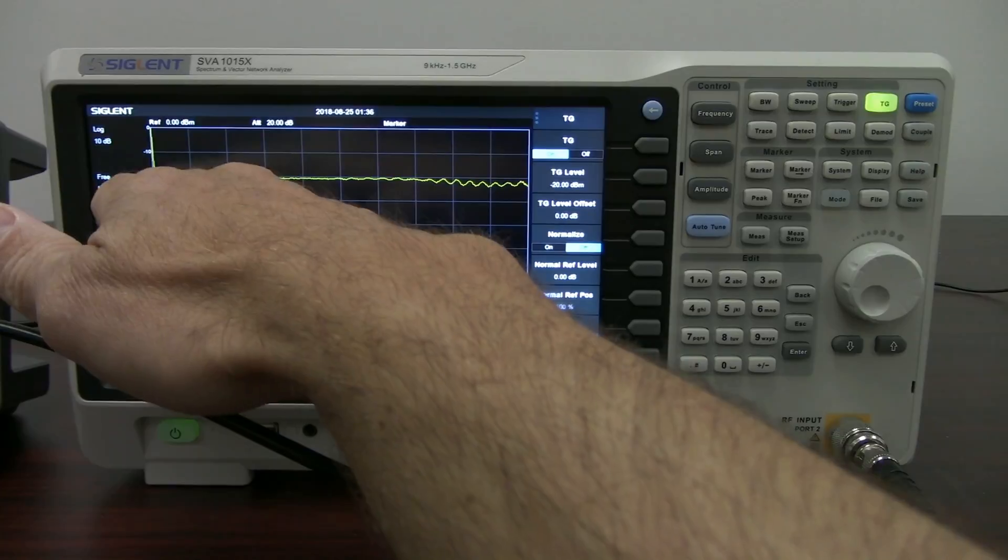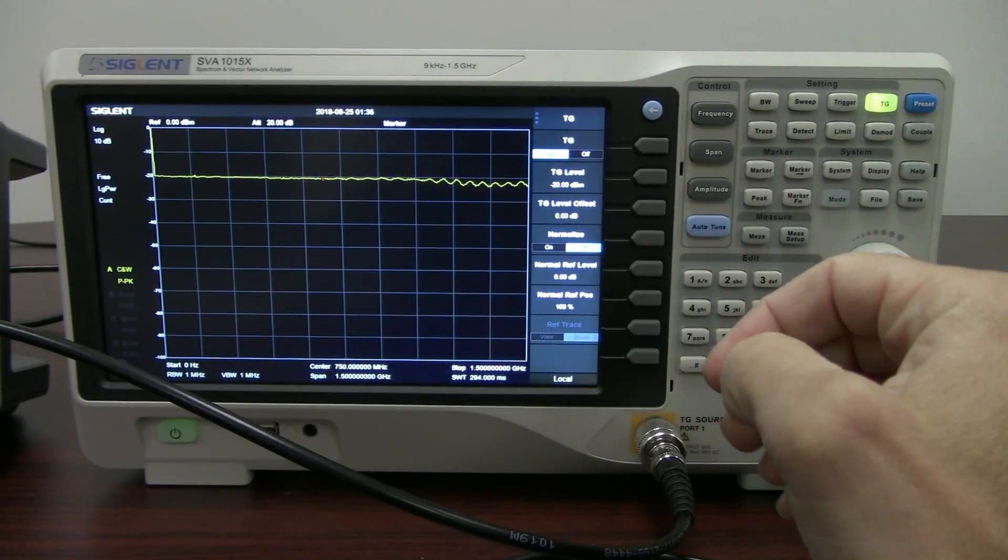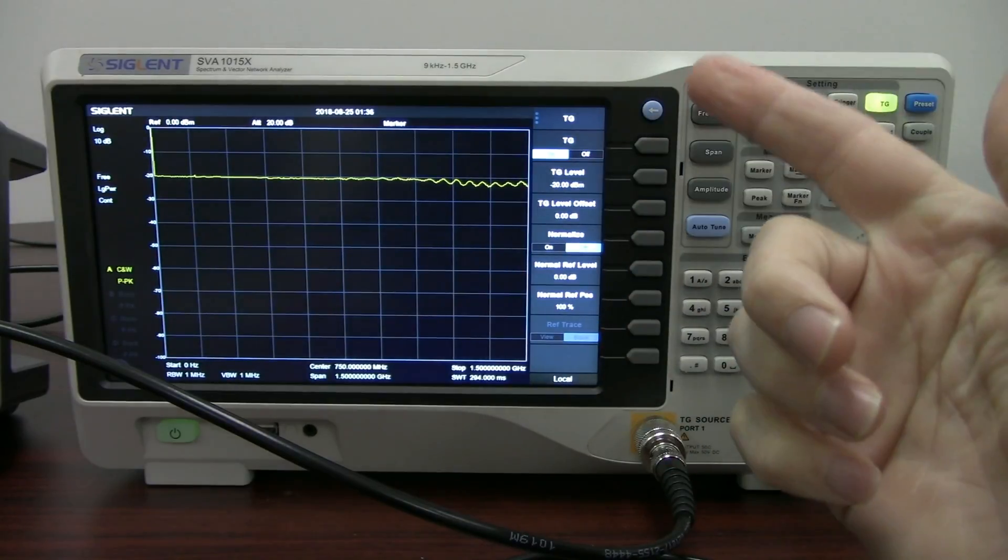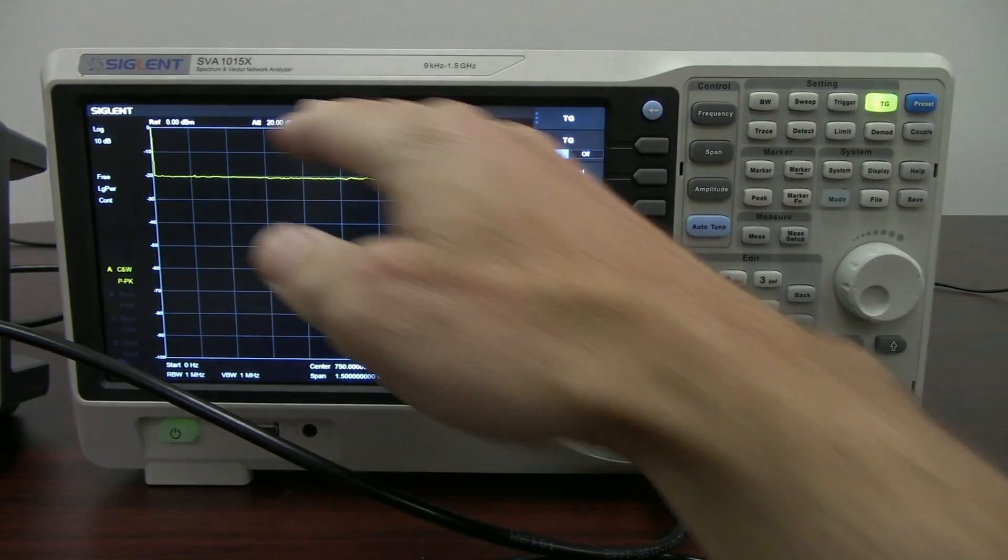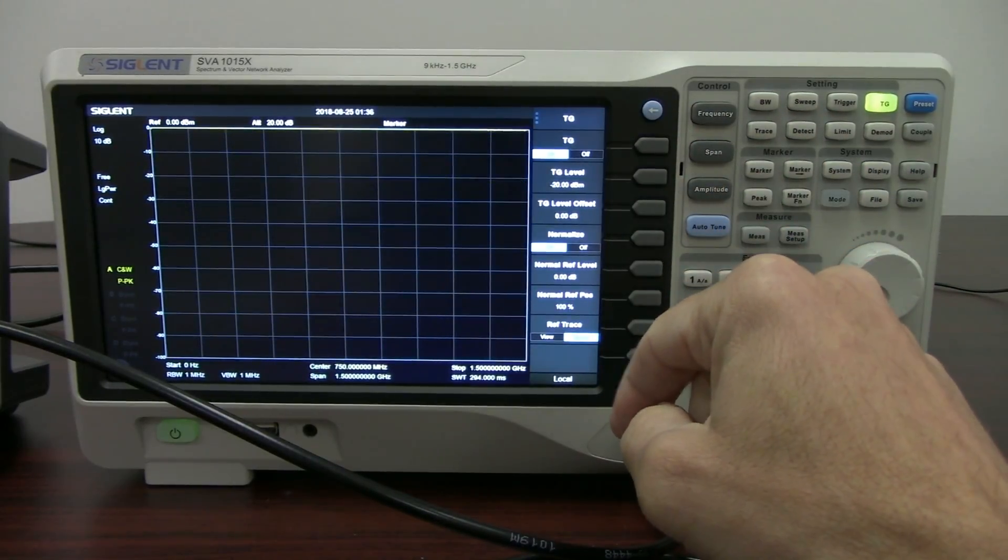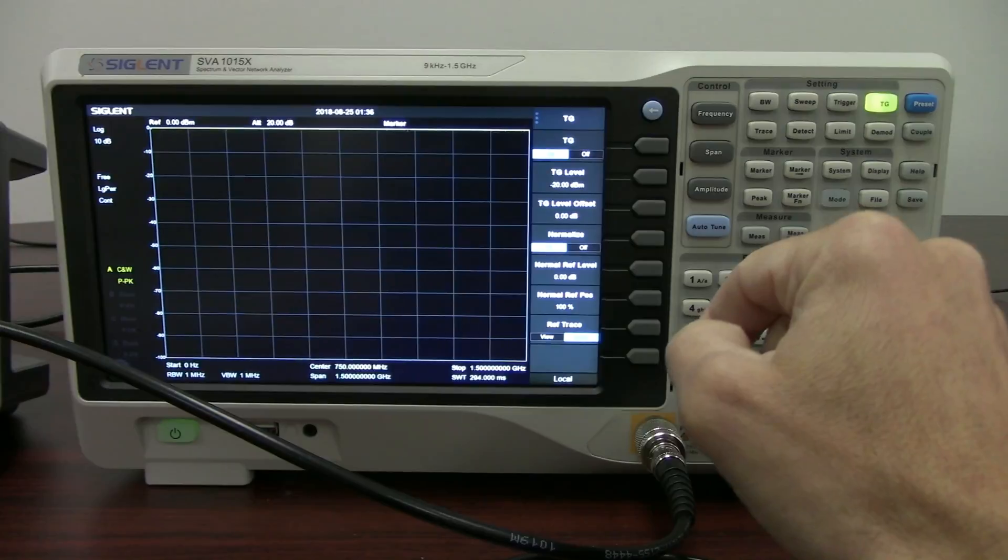So it's going to take this value at each frequency across here, each frequency bin. Each value that we have on there is going to be subtracted from itself, and we're going to get zero. So you're going to see when we do the normalization, the line is going to go straight, and it's going to be at zero dBm.